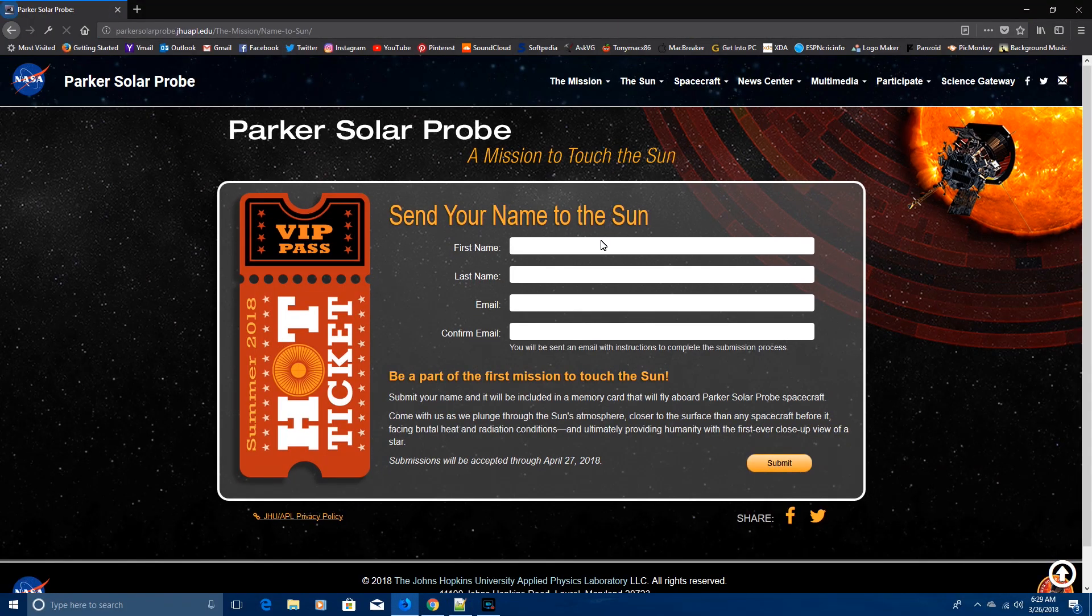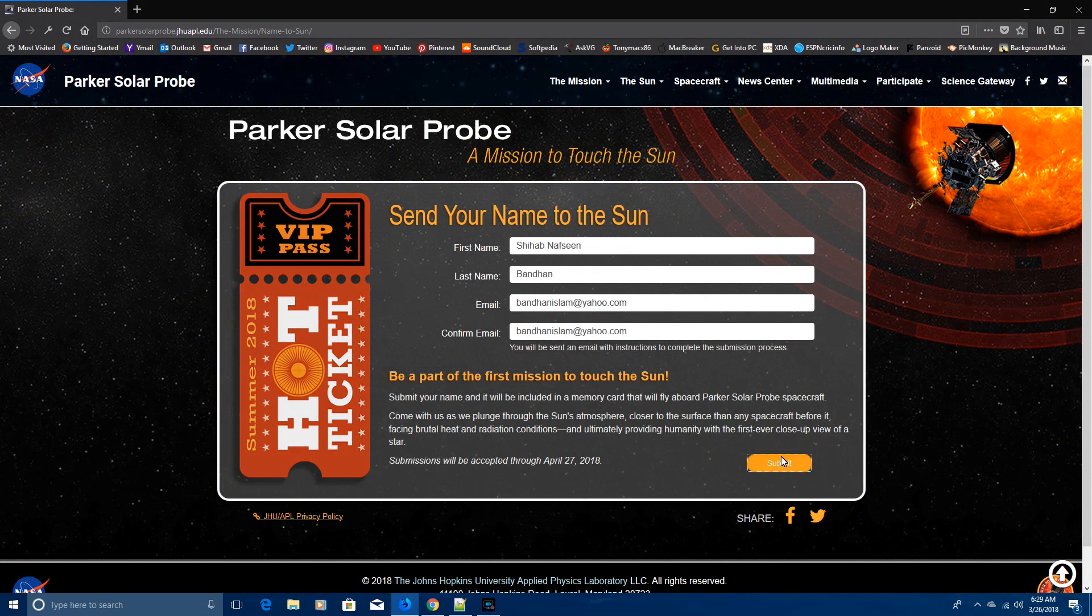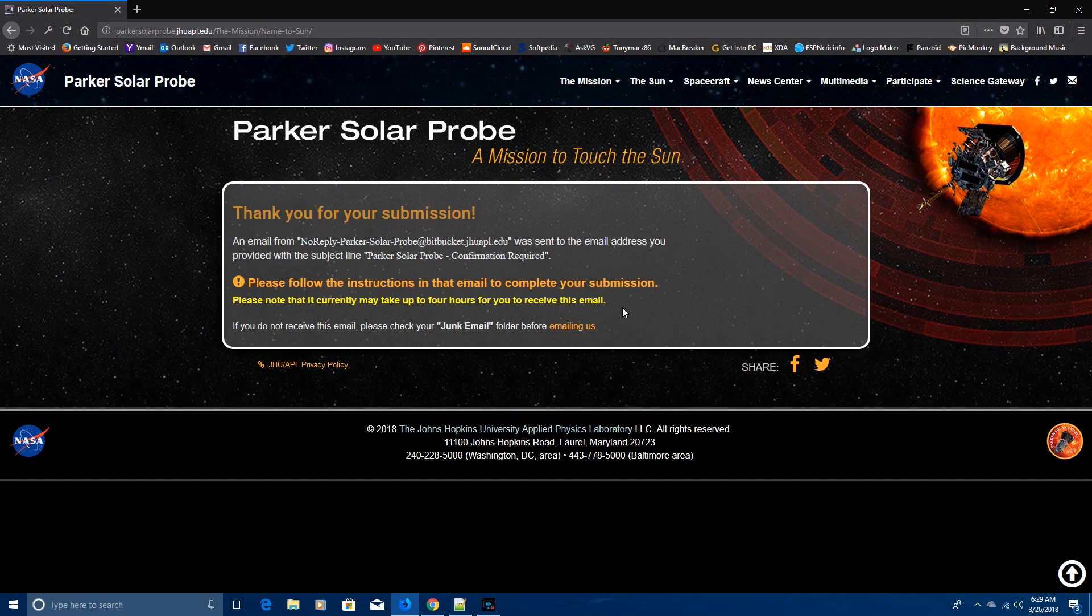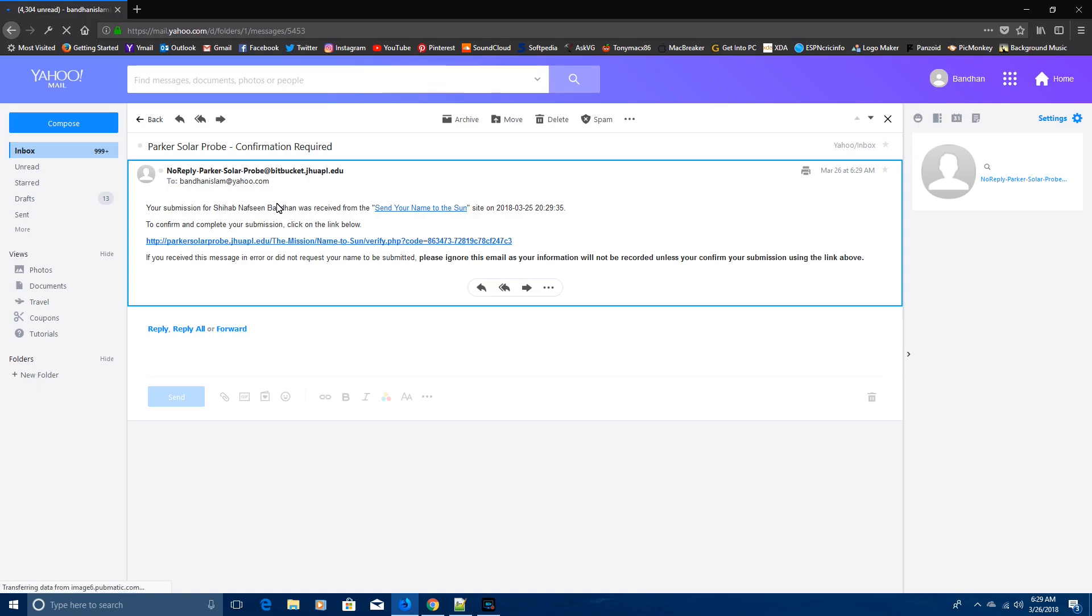And here it goes. Now fill in the required information and use your real identity and email address. Click submit. An email has been sent to your email address. Go to your inbox, click the mail, and head towards the confirmation link. Now you are done.